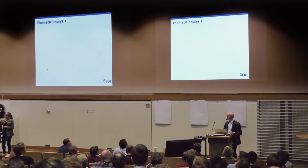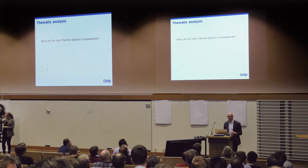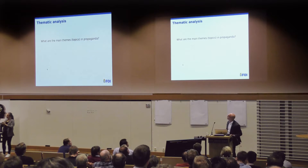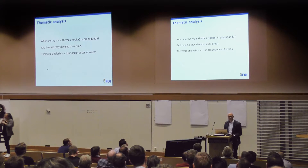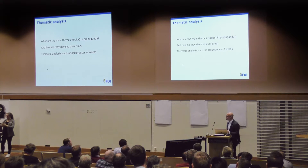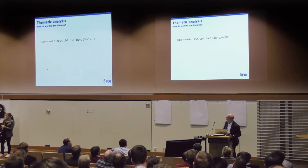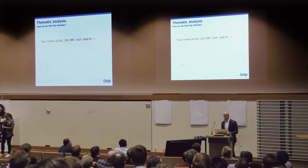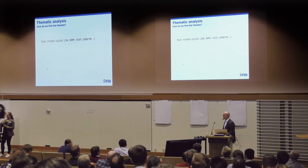One of the main analyses we do on this type of material is what we call thematic analysis — simply trying to understand what is being talked about in these environments: what are the main themes or topics in the data and how do they develop over different domains and over time. Thematic analysis means counting occurrences of words in data. We define a topic as a set of keywords and simply count the occurrences over time or over domains. But how do we define the themes? We can have a theory-driven approach — we might know that ISIS talks a lot about the utopia of the caliphate — or we might want to extract the themes from the data itself.